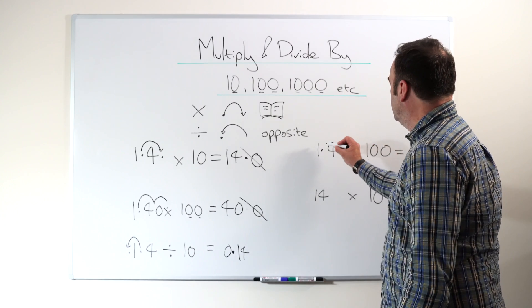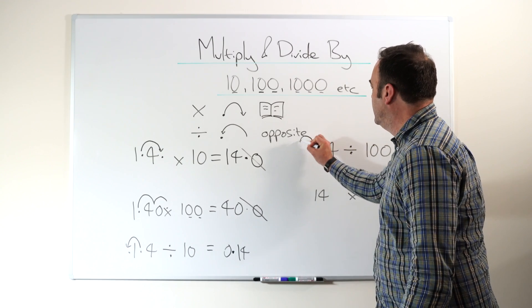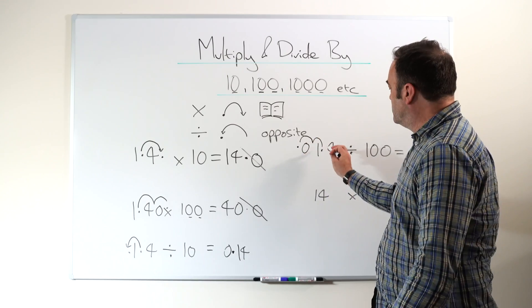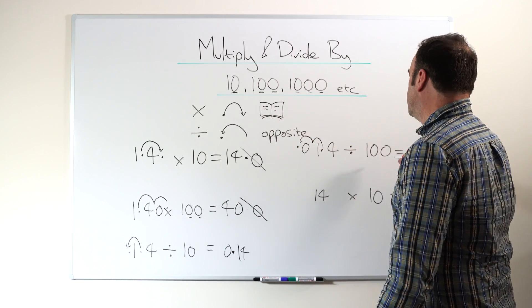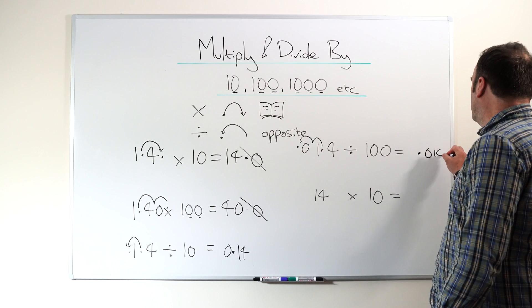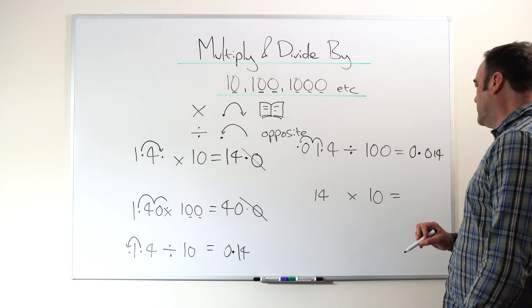Divided by 100. So now we've got two jumps over. We run out of numbers, so we add a zero. I would strongly suggest that children draw these jumps on when they're still learning this. It's a lot easier for them. So this then becomes 0.014, or as it should be written, 0.014.